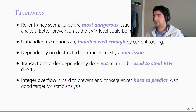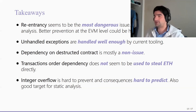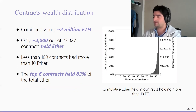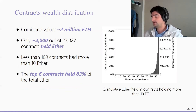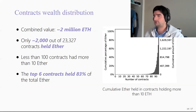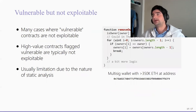The main takeaway is that reentrancy is by far the most dangerous vulnerability of those we analyzed, and up to this day there are still many contracts being exploited using it. On the other hand, others like unhandled exceptions and dependency on disrupted contracts were not that problematic for fund transfers. We also tried to understand why so little ETH was actually exploited given the potential amounts at stake. The main finding was that ETH is so concentrated in so few contracts that as long as those contracts are very secure, there is fairly little chance that a large amount will be at risk. The top six contracts held roughly 83 percent of the total ETH, and only about 10 percent of the contracts we analyzed even held any ETH.